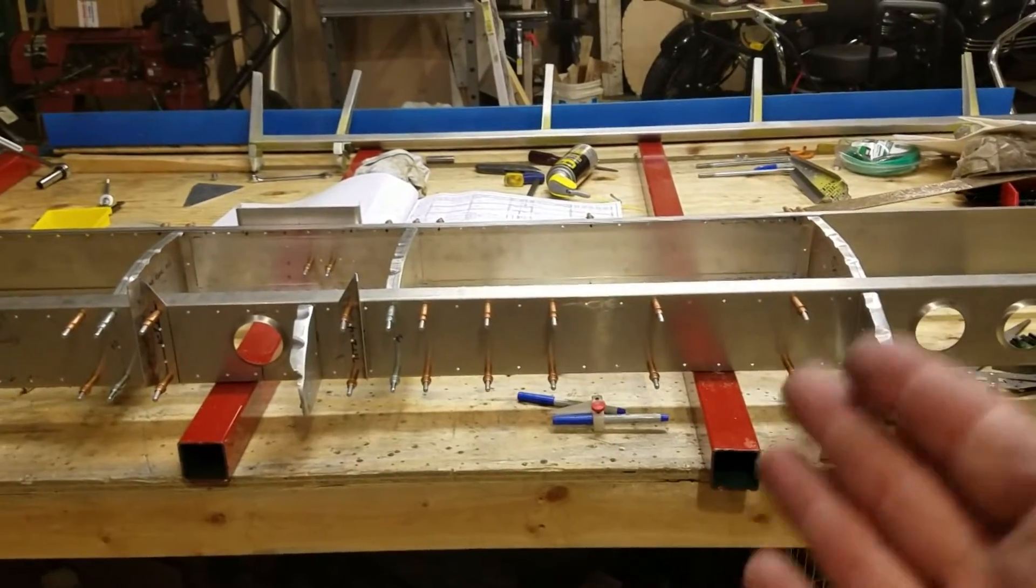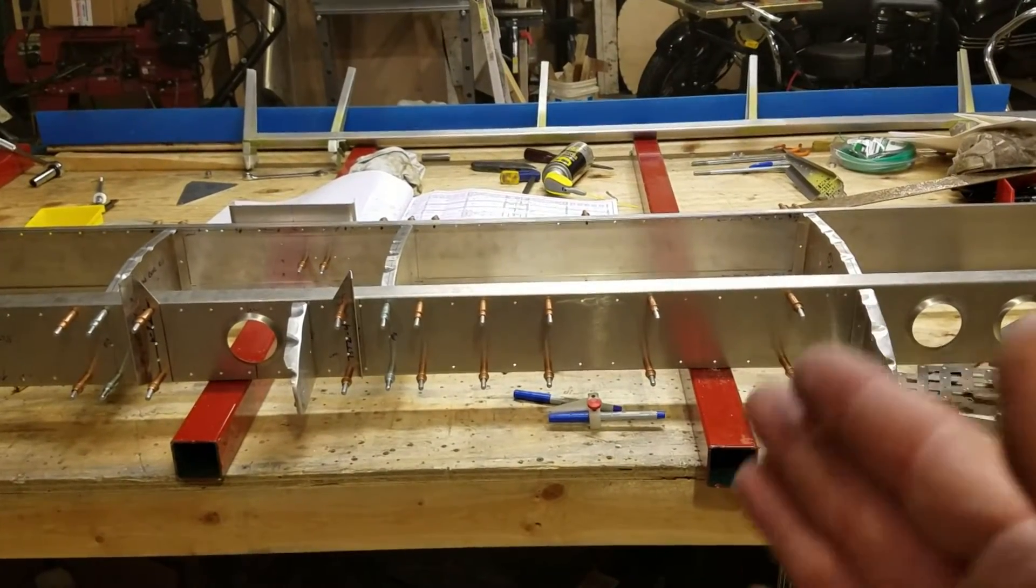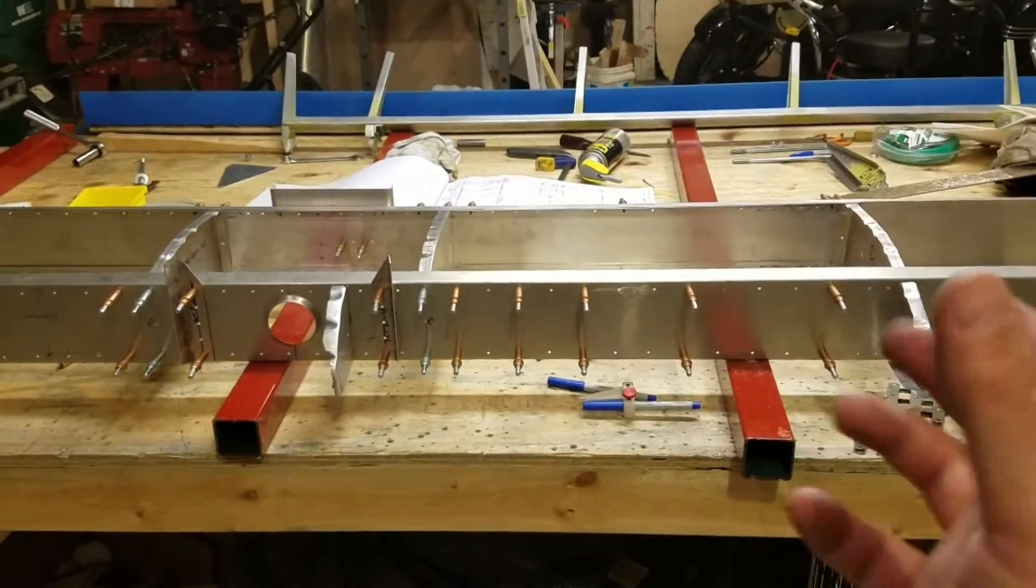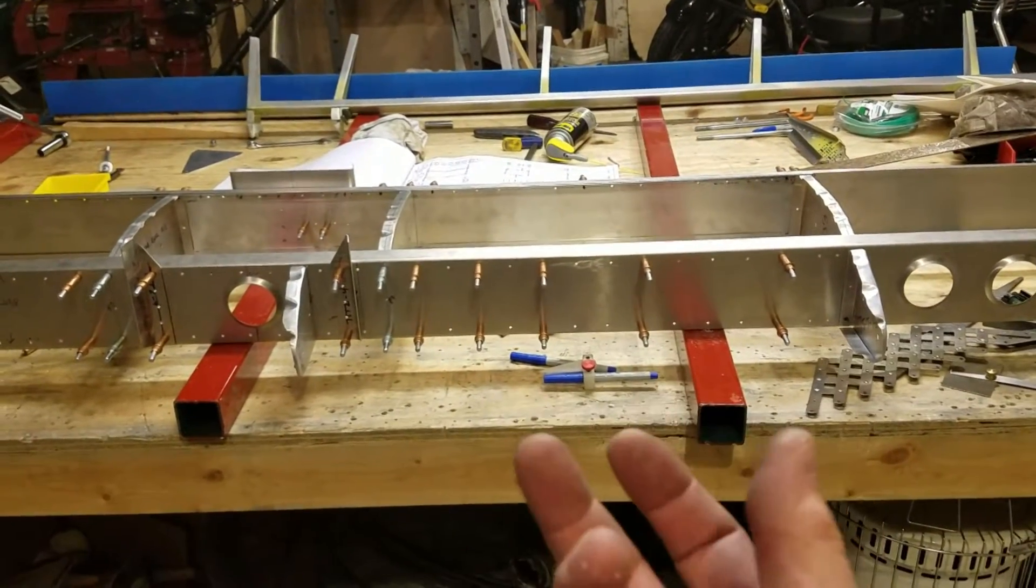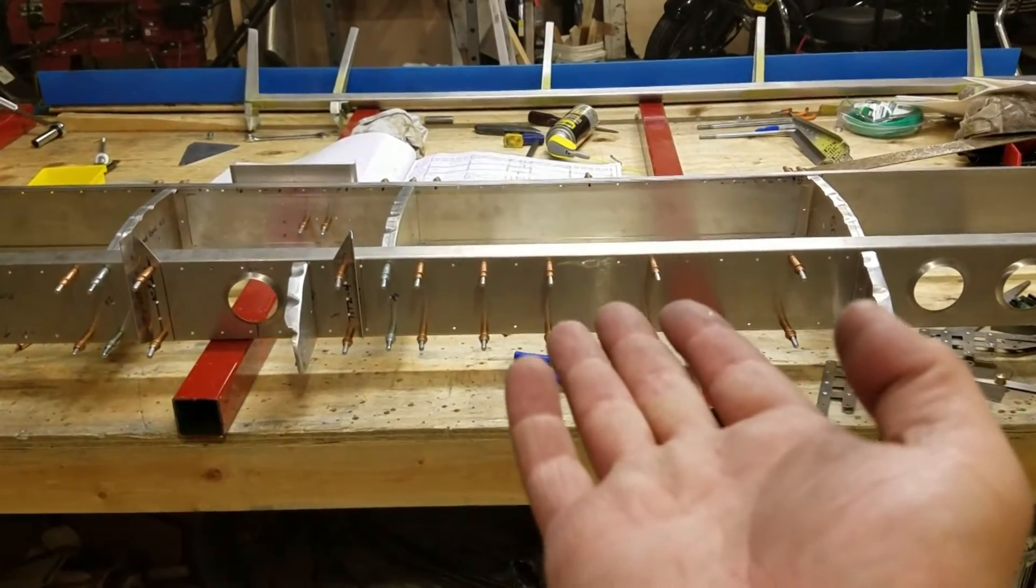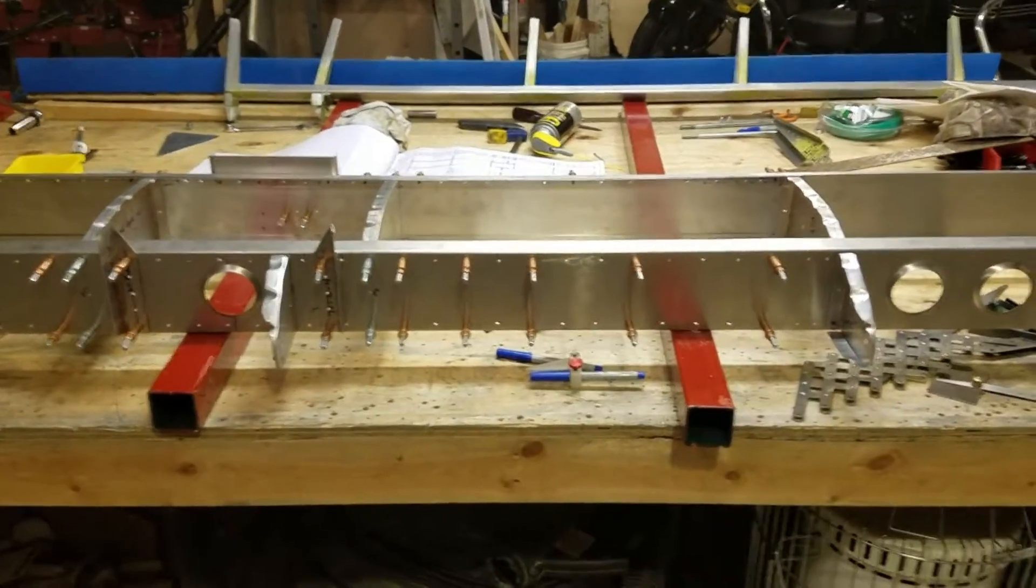I'm actually going to bolster that before I start the wings and fuselage with a center brace and an adjustable foot pad so I can draw that bow up out of it and make the table perfectly flat.